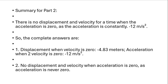Summary for Part 2: there is no displacement and velocity for when acceleration is zero, as the acceleration is constantly minus 12 m/s². Complete answers: (1) displacement when velocity is zero = minus 4.83 meters; acceleration when velocity is zero = minus 12 m/s². (2) No displacement and velocity when acceleration is zero, as acceleration is never zero.